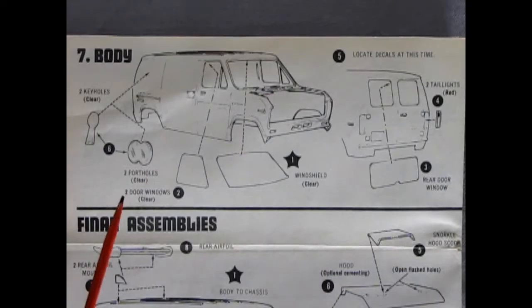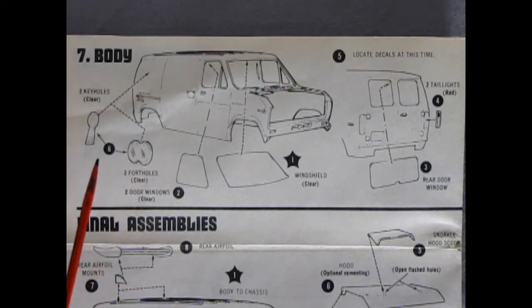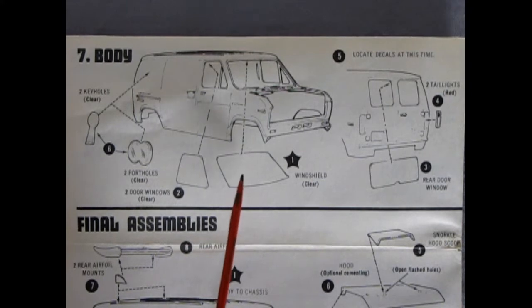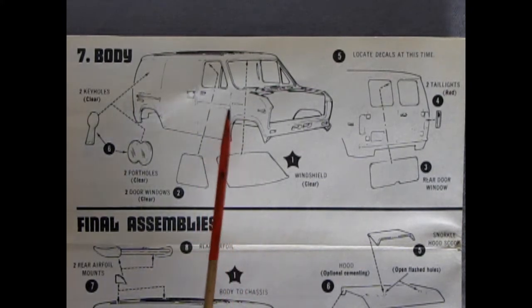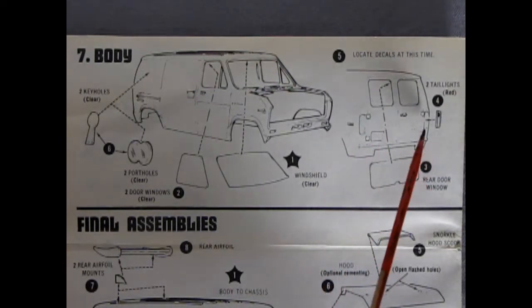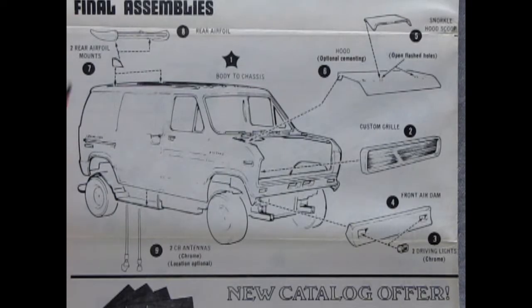Now panel seven shows you how to put the body together. Now we've got two different types of windows out the side. These are our porthole windows. You got these double style and you got this keyhole kind. So you might have to cut a little hole in the side of the body just to sink them in proper. Then we've got our side windows and our windshield and this will pop up from the inside of the van. Then we've got a window in the back which also comes in from the back. And then two nice red shiny taillights.